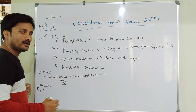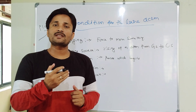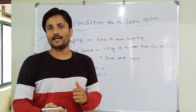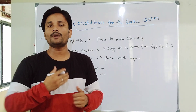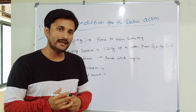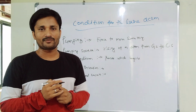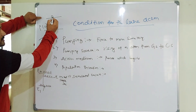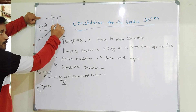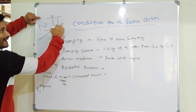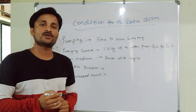Stimulated emission is nothing but when an electron moves from the excitation state to the ground state by releasing photons of energy — that is called stimulated emission. We have already discussed this while studying the principles of laser. When the excited electron comes from the excitation state to the ground state and releases photons of energy, this phenomenon is called stimulated emission.